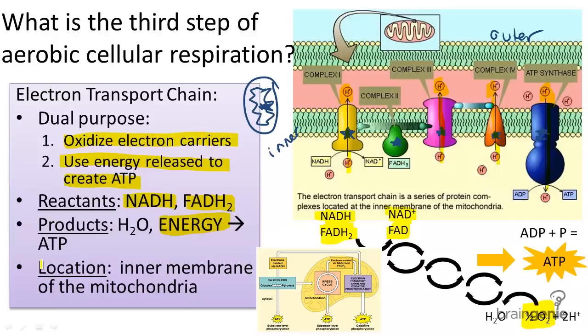And finally, the location of the electron transport chain: in the inner membrane of the mitochondria.